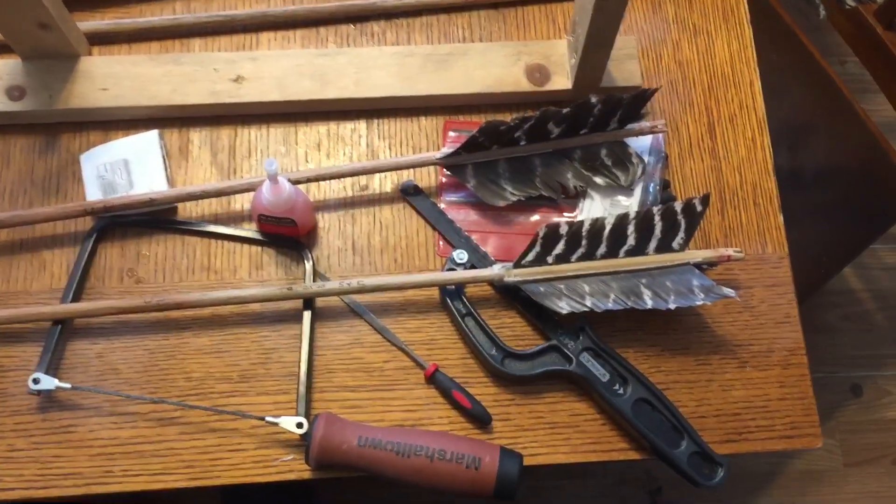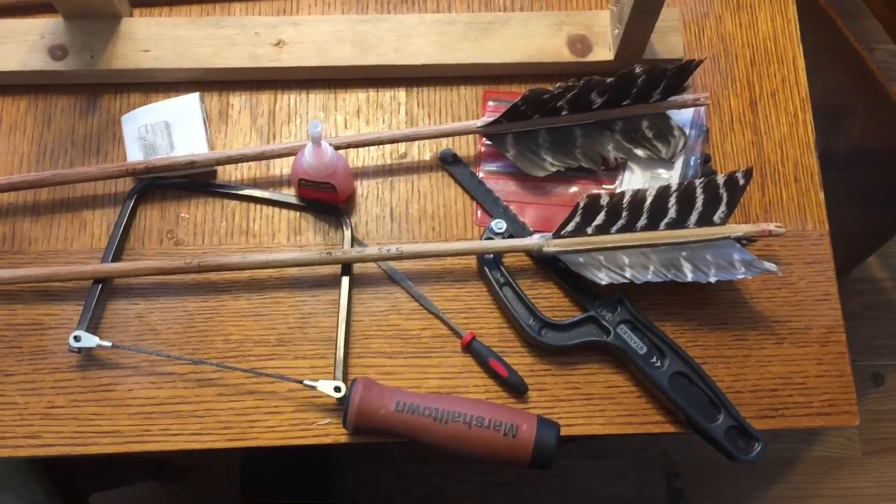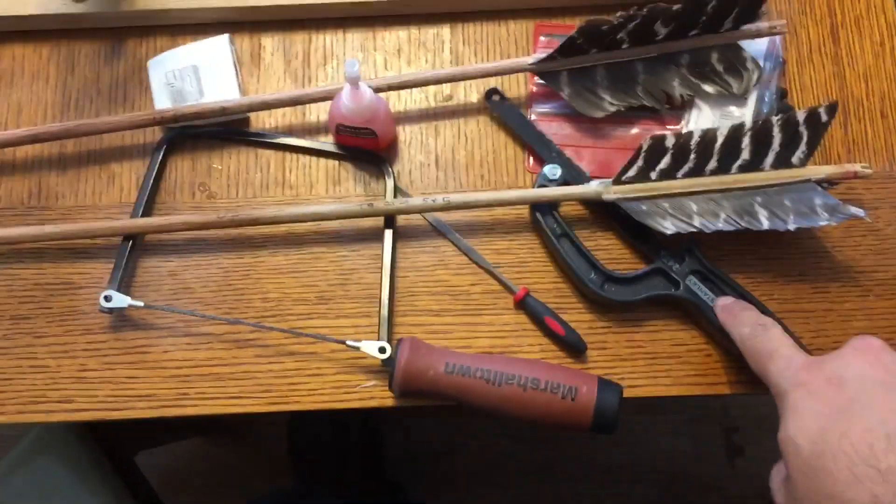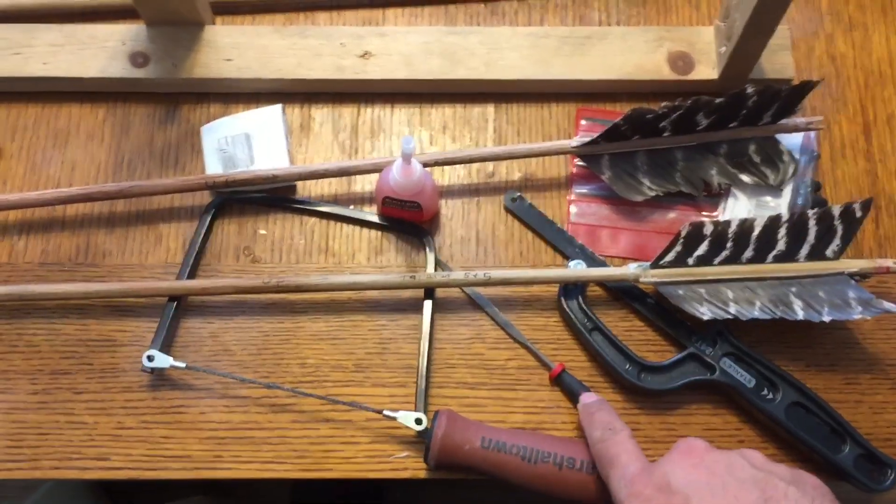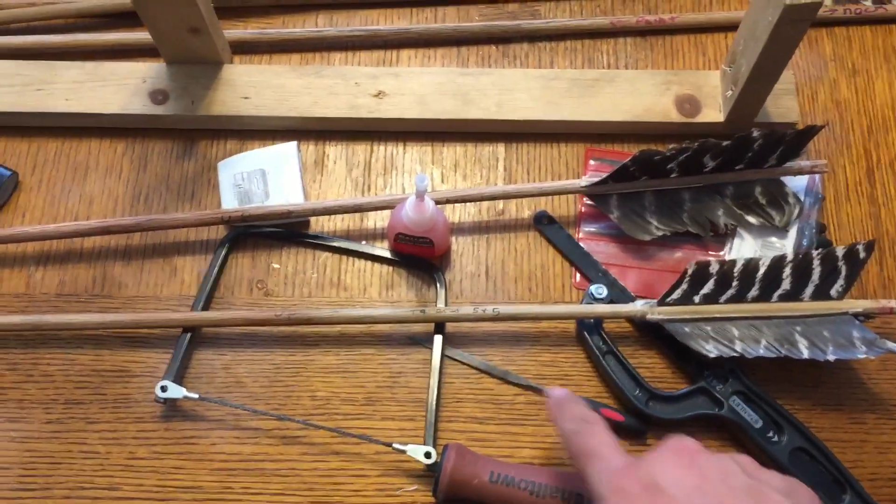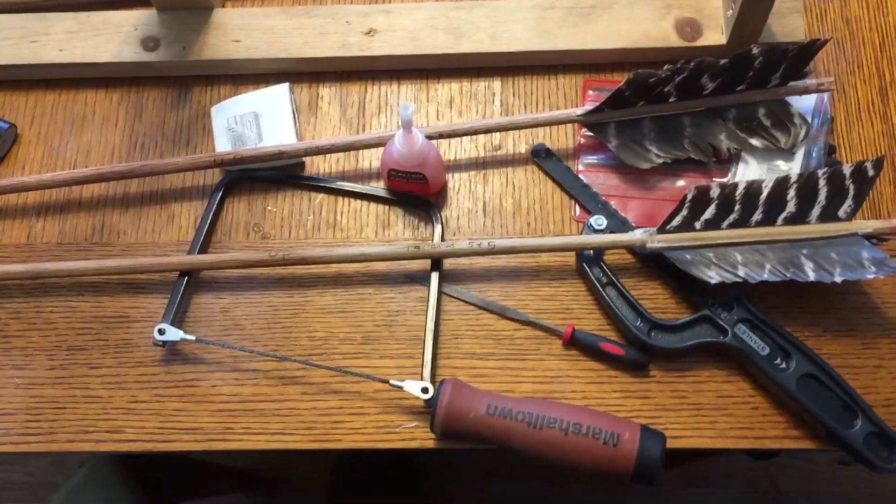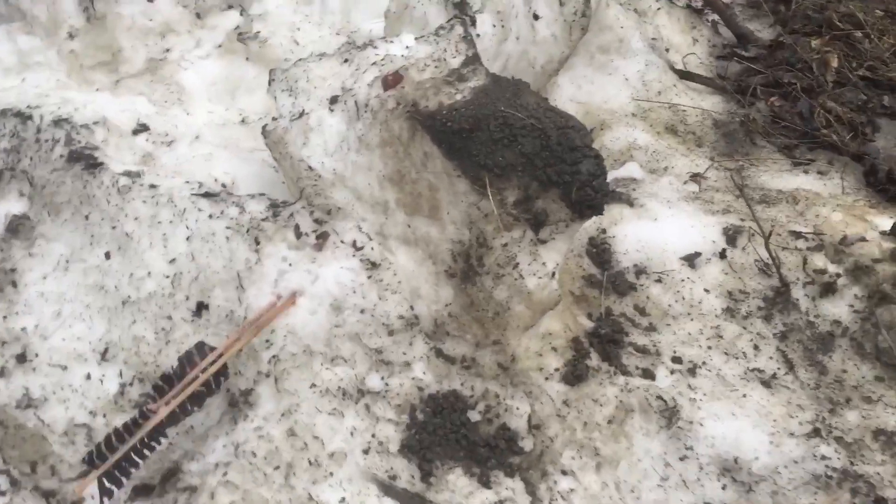So I've got the ends trimmed down. Had to trim the feathers too. Hack saw to cut them. Tile saw to cut the nocks. Little file to clean it up a bit. Wrapped some thread around there and glued it down. I'll go test them at some point. It seems they're still weak.